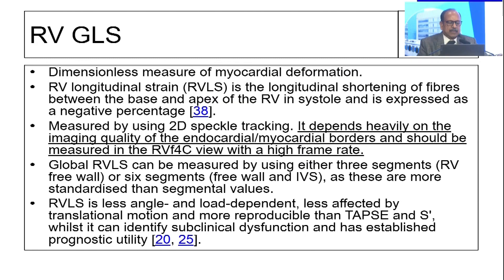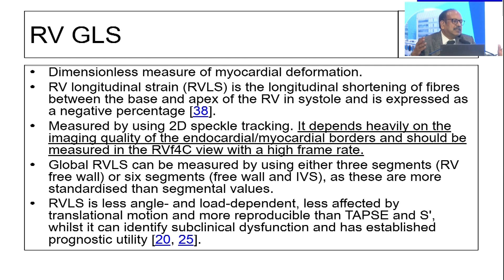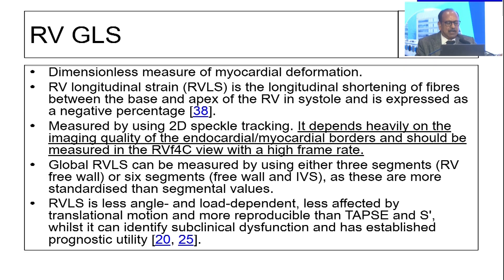The next most important modality, which has multiple benefits and multiple utility not only for RV but many other conditions, is GLS. It is dependent on imaging quality of endocardium and myocardial border. It should be measured in a focused RV view. If the image is good, you can get a good GLS. If the image is horrible, you are going to get a horrible outcome.